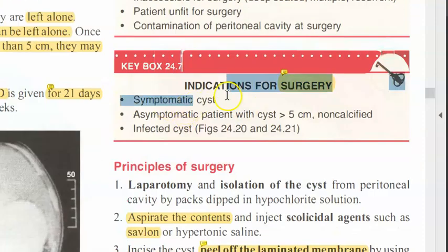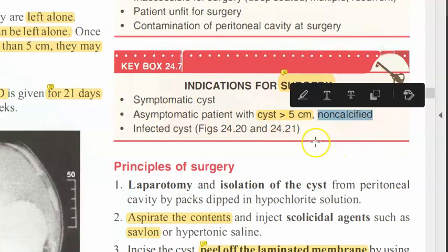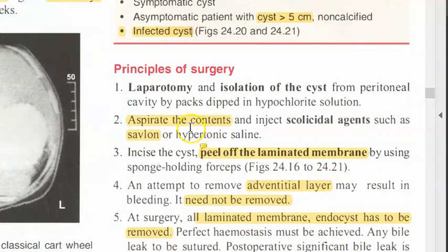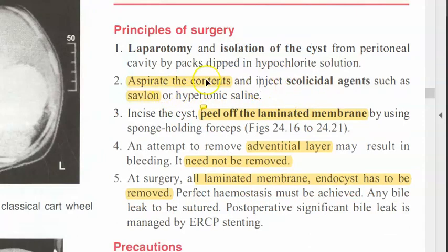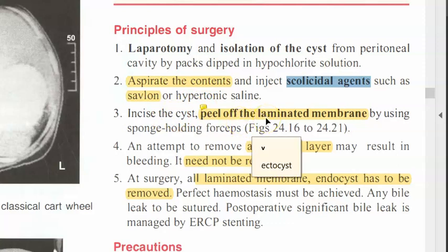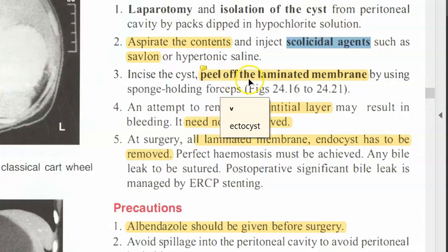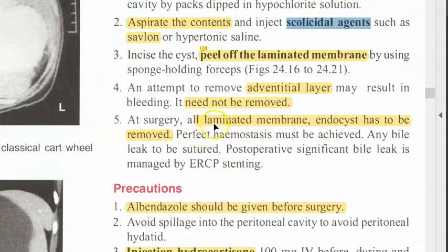Surgery is indicated if the person has symptoms, if the cyst is greater than 5 cm, if it is non-calcified meaning active, or if it is an infected cyst. You will do laparotomy and isolate the cyst — you go to the liver, aspirate the contents, then inject scolicidal agents like Savlon or hypertonic saline, then remove the ectocyst and endocyst, also called the laminated membrane. The adventitia must not be pulled out, otherwise the patient will bleed.